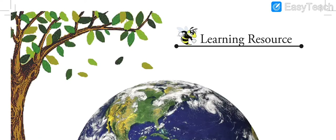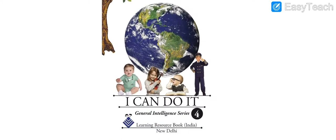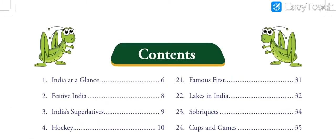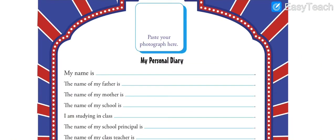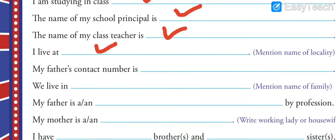This is your GK book - this is the very first page. First thing you have to do is go to the next page after the index and fill all the details: paste your photograph, fill your name, father's name, mother's name, name of the school, the class you are studying in, principal name - that is Dr. Paramita Mishra - your class teacher's name, and your location.